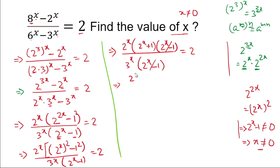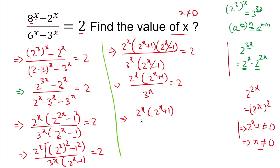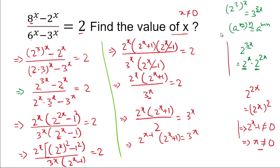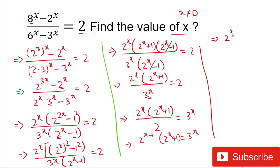The factor (2 to the power x minus 1) cancels from numerator and denominator. The remaining expression is: 2 to the power x times (2 to the power x plus 1) divided by 3 to the power x equals 2. Rearranging, we get 2 to the power (x-1) multiplied by (2 to the power x plus 1) equals 3 to the power x. This is our working equation.